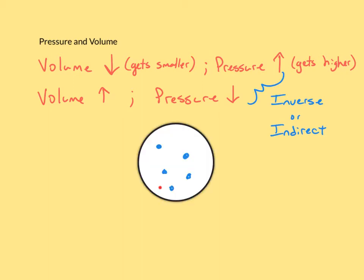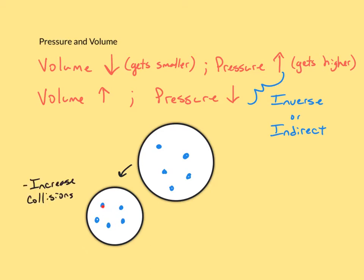Imagine you have a balloon with five gas particles inside. If I squeeze the balloon so the volume gets smaller but keep the number of particles the same, those particles are now in a smaller space and will bounce into each other and the walls more often. Remember, pressure is basically when a gas particle hits the wall and bounces off. If you decrease the space those gas particles can move around in, you increase the pressure because the particles hit the wall more often.